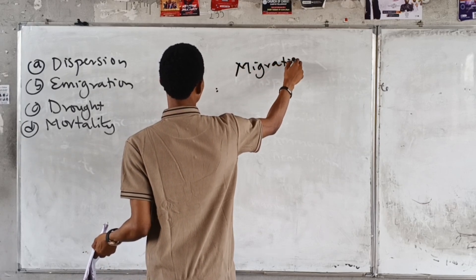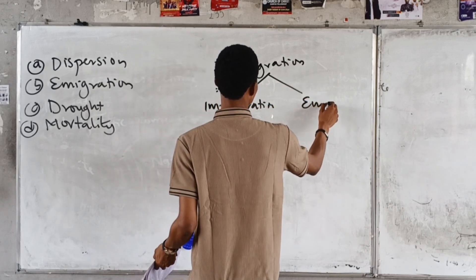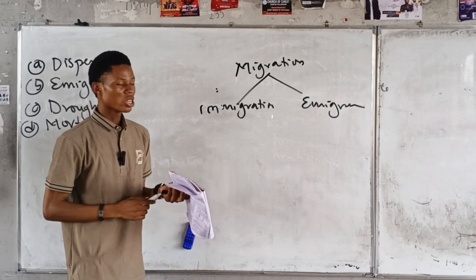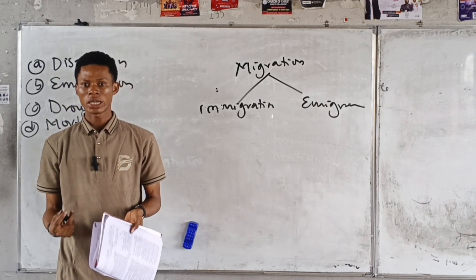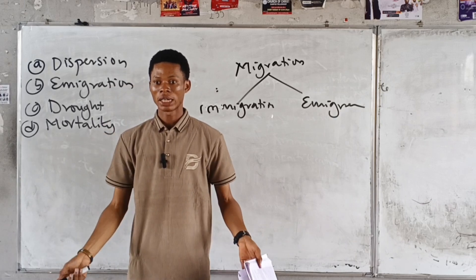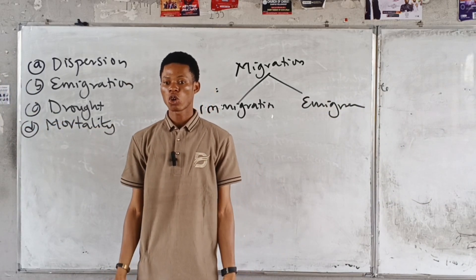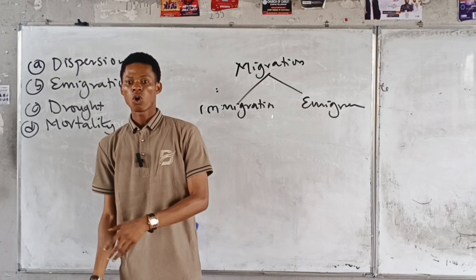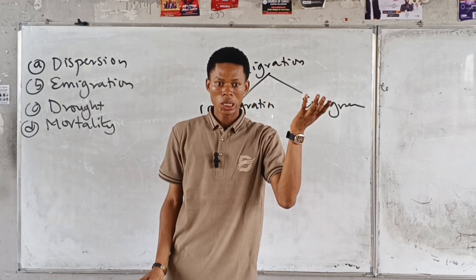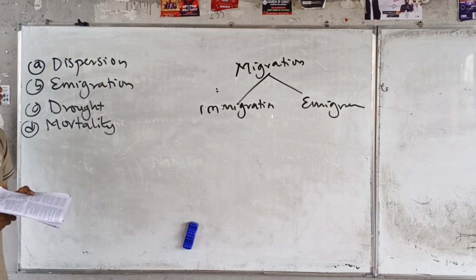Migration is divided into immigration and emigration. Immigration means coming into a particular place — for example, people from different countries coming into Nigeria. Emigration means leaving — like leaving Nigeria to go to the UK. So if you are leaving, you're emigrating; if you are arriving, you're immigrating. Emigration reduces numbers, so it would not increase competition.